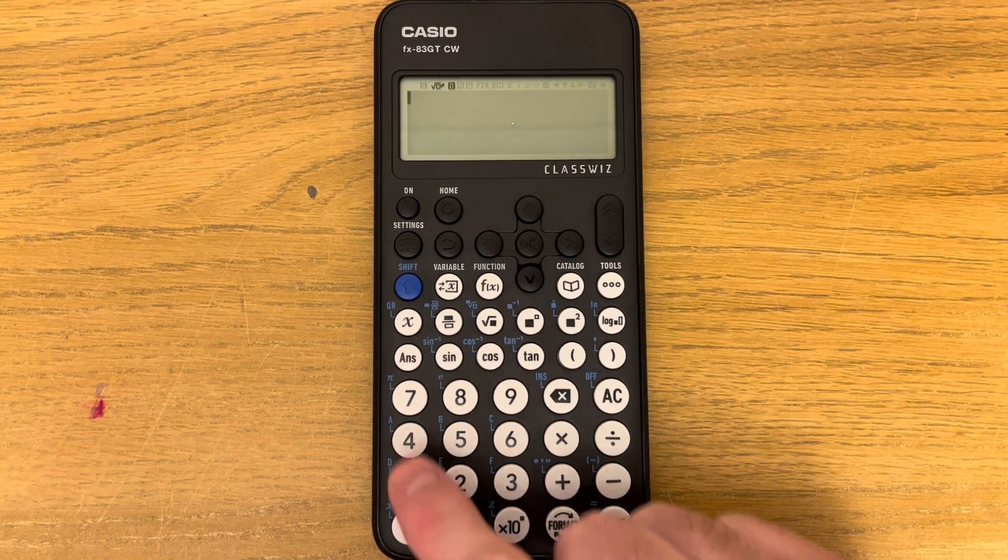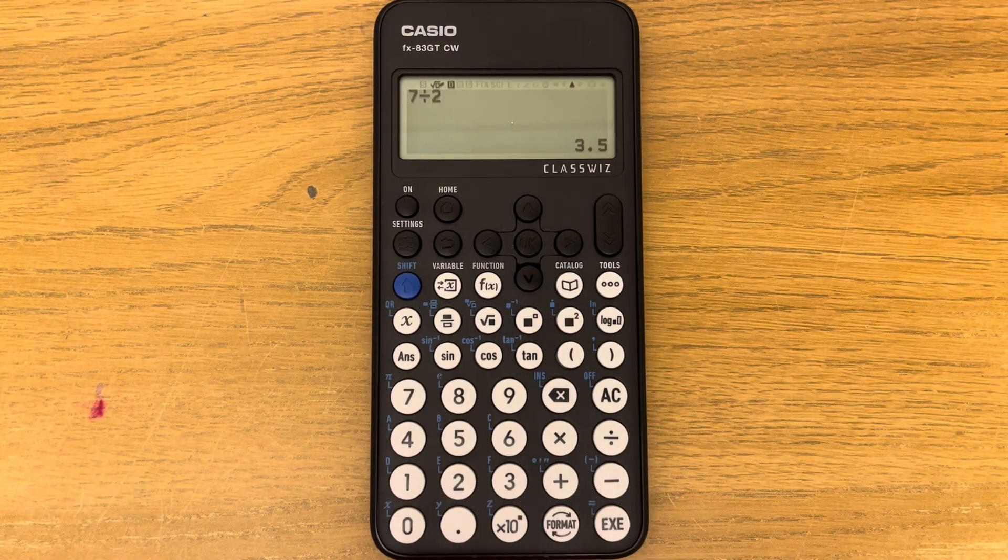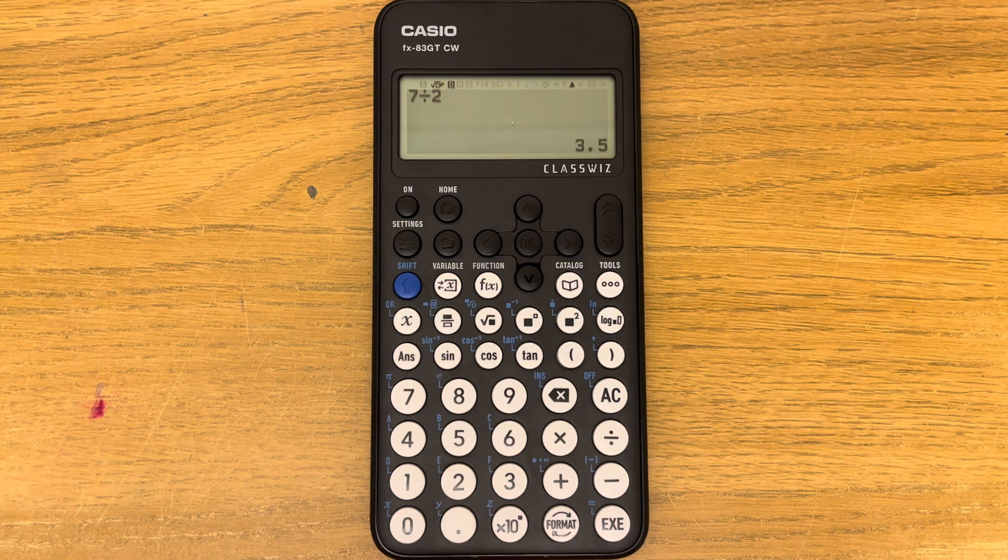So if we did seven divided by two, press equals. So as you can see, we get a decimal answer first.